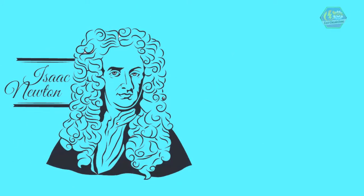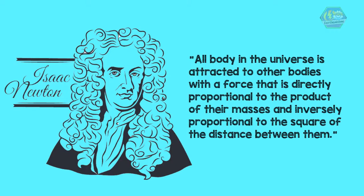Newton first published a principle in 1687. This principle states that all bodies in the universe are attracted to other bodies with a force that is directly proportional to the product of their masses and inversely proportional to the square of the distance between them.